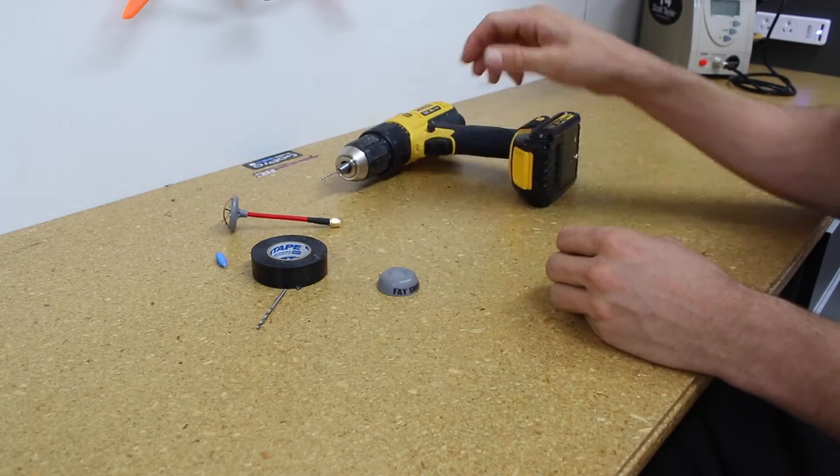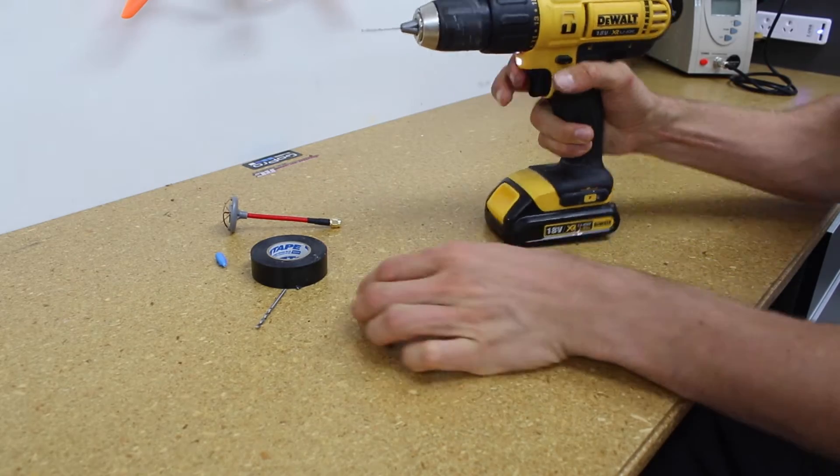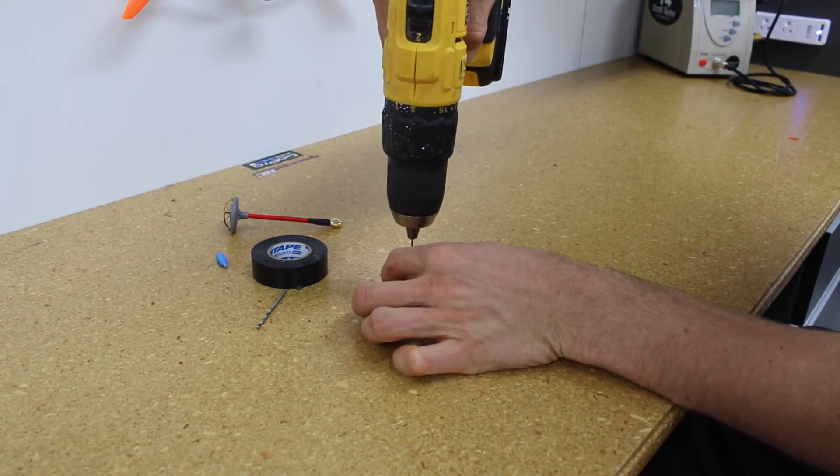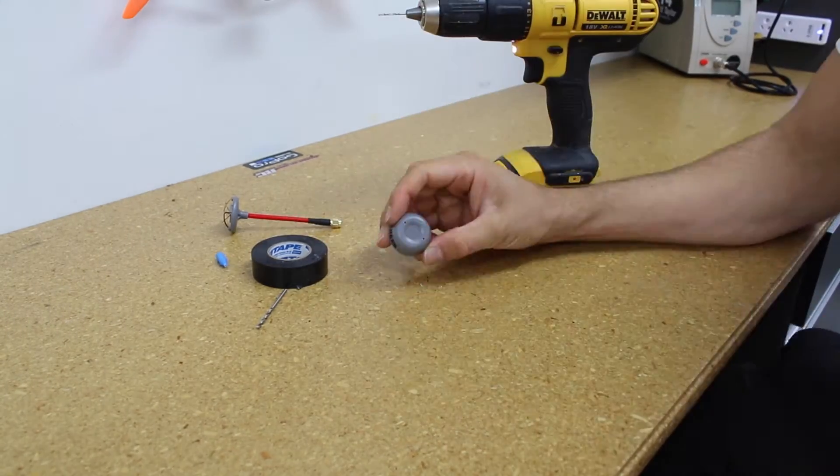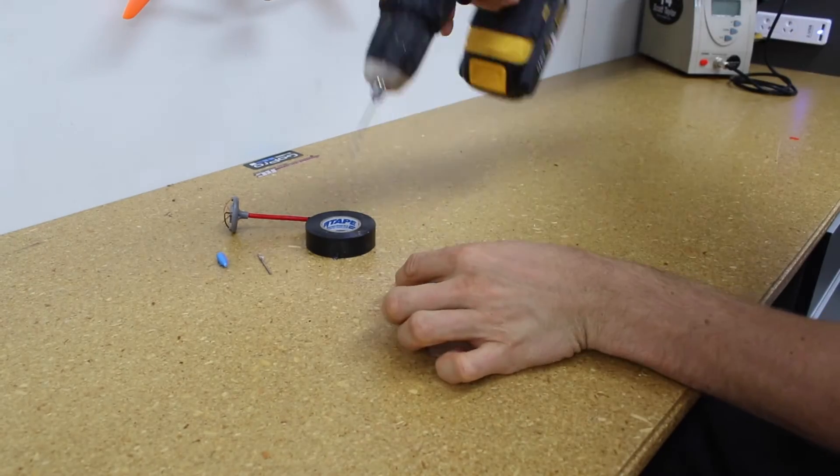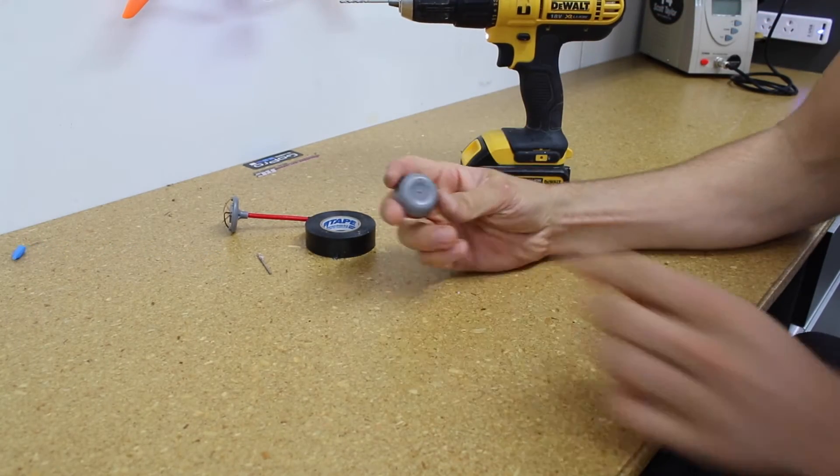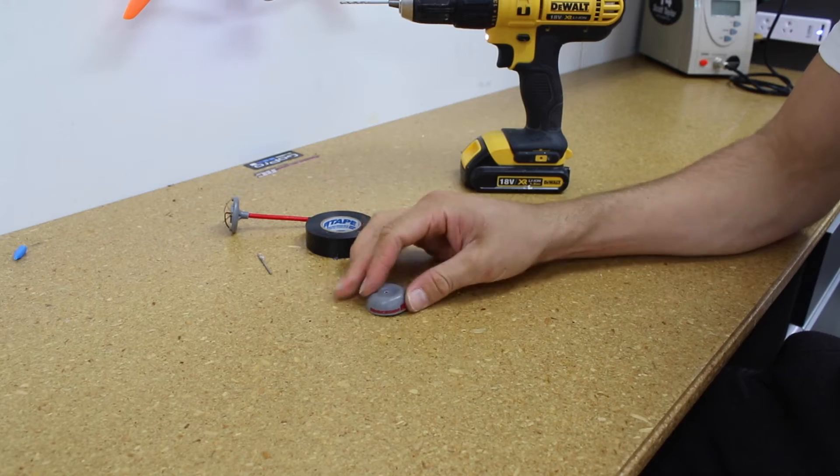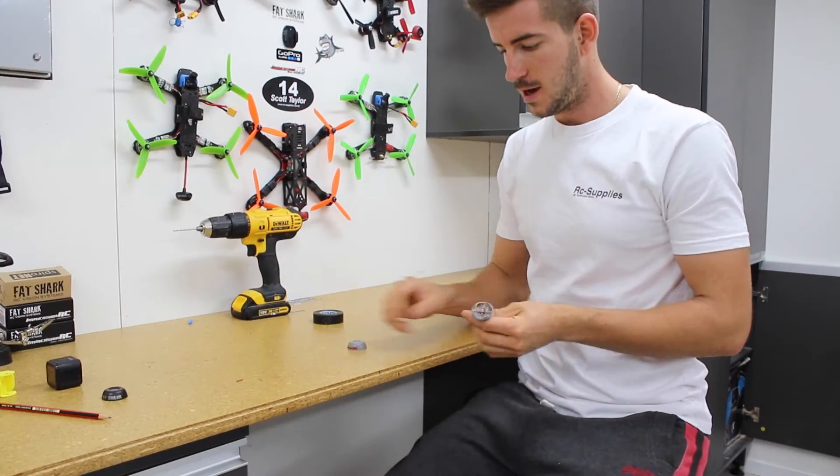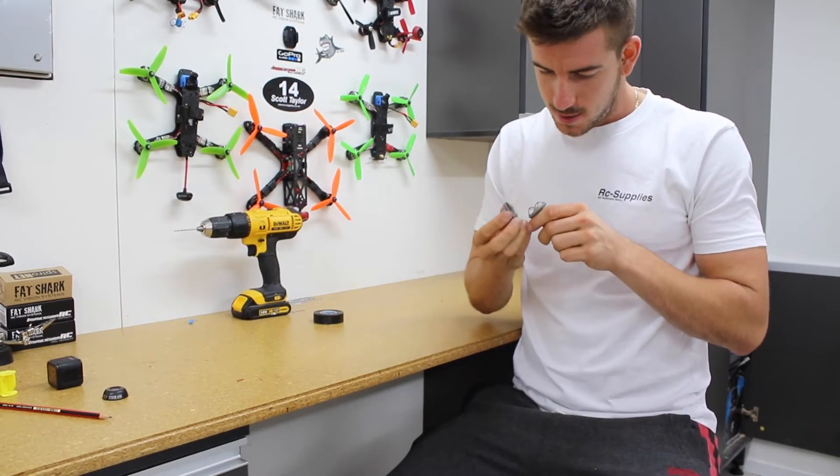So you get your cap and you drill, so it looks like that, you got three holes. After you've done your three holes you want to put the cap back on like so.